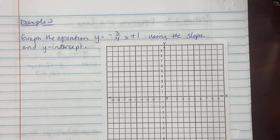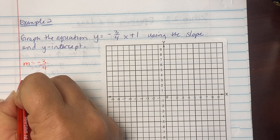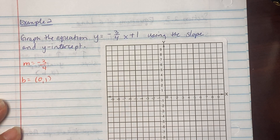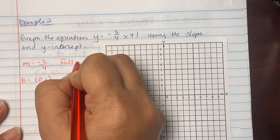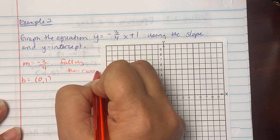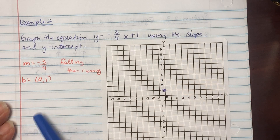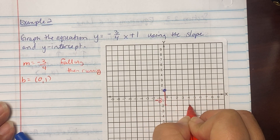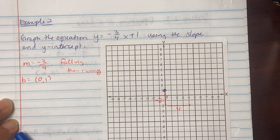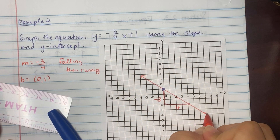Example 2: Graph y equals negative 3/4 x plus 1 using slope and y-intercept. The slope is negative 3 over 4 and b starts at zero comma one. Since slope is negative, we are falling then running. Plot the point at zero one, go down three units, then over four — that's your negative 3 over 4. Draw the line with arrows on both ends.